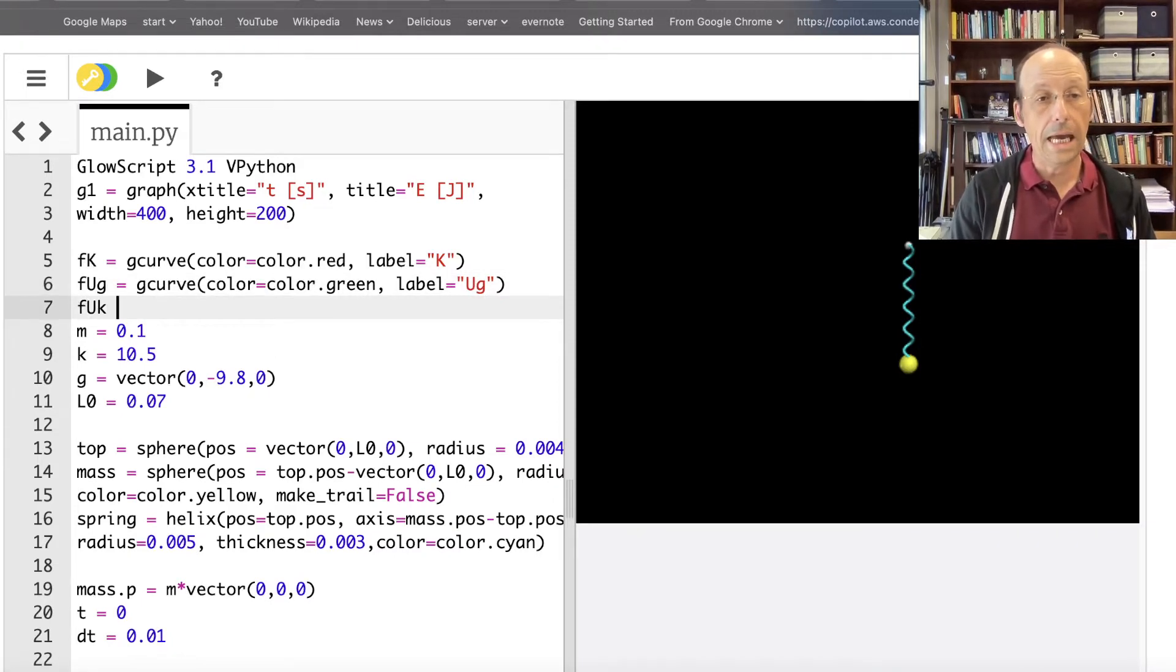And then FUK, G-curve. Color equals color. What color is this? Spring potential energy. So I got red. Let's do this as blue. Color equals color dot blue. And label equals UK.